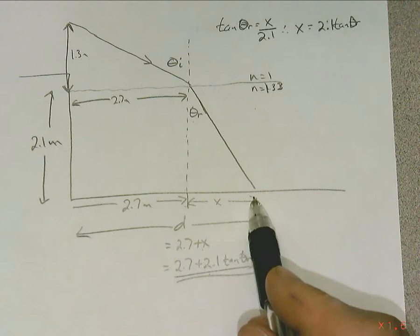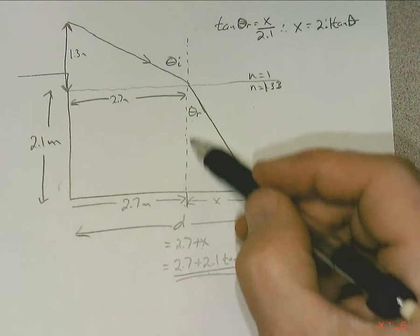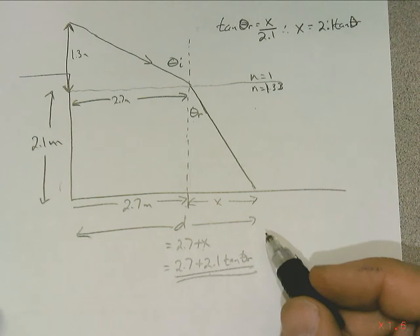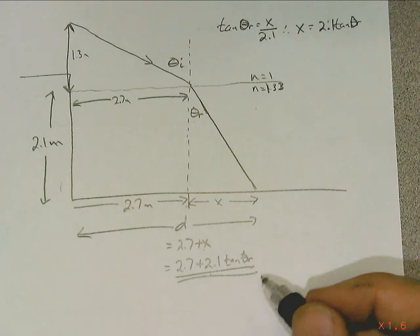Find out this distance x, which is just 2.1 times the tangent of the angle. So our job is to find theta r, and of course we'll do that by getting the incident angle using Snell's Law and getting the rest of it.